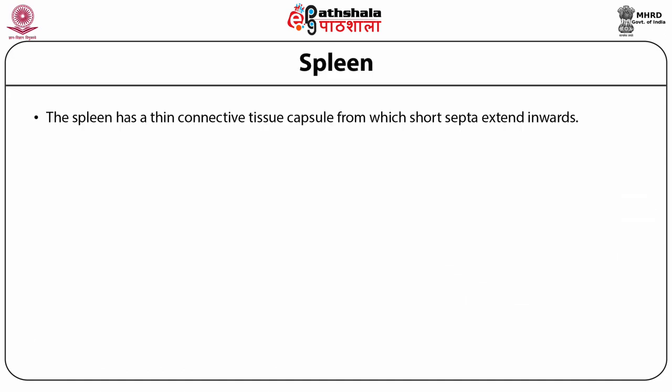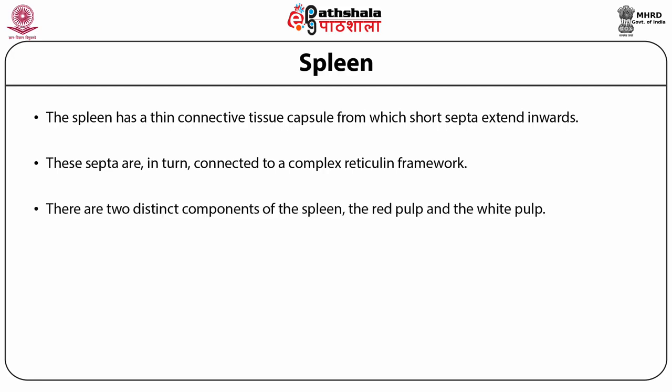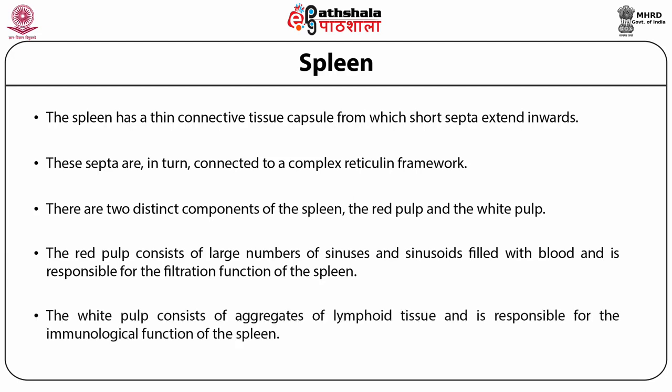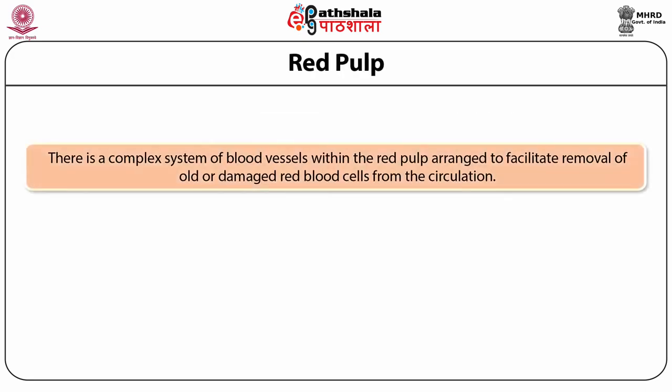The spleen has a thin connective tissue capsule from which short septa extend inwards, connected to a complex reticulin framework. There are two distinct components of the spleen: the red pulp and the white pulp. The red pulp consists of large numbers of sinuses and sinusoids filled with blood and is responsible for the filtration function of the spleen. There is a complex system of blood vessels within the red pulp arranged to facilitate removal of old or damaged RBCs from the circulation.